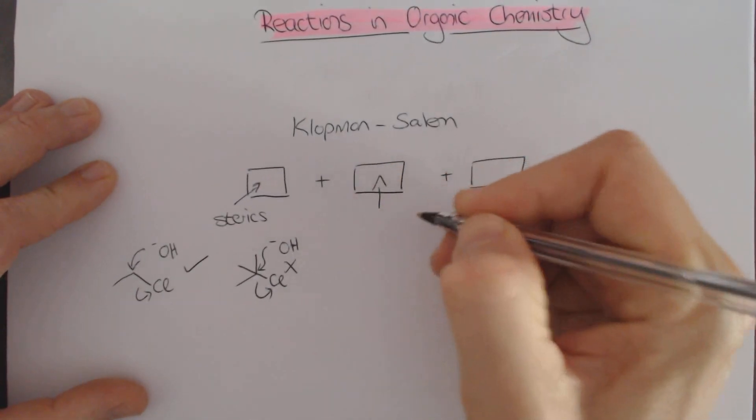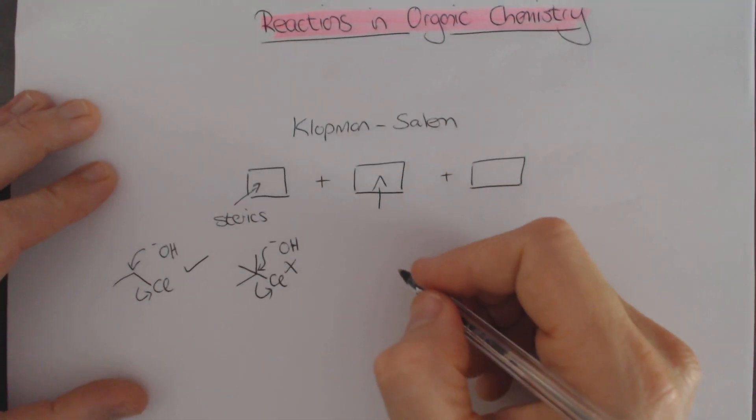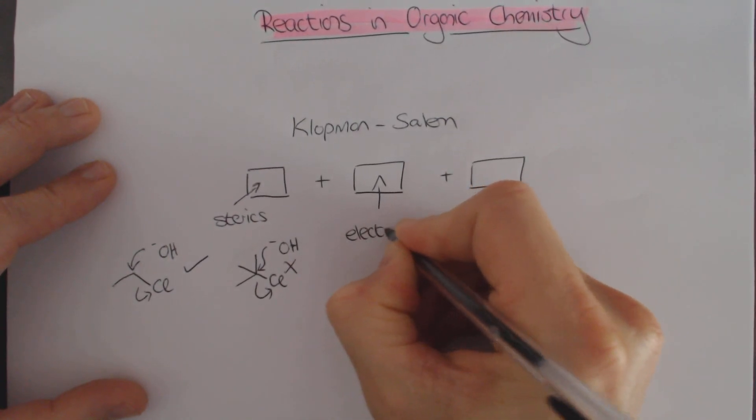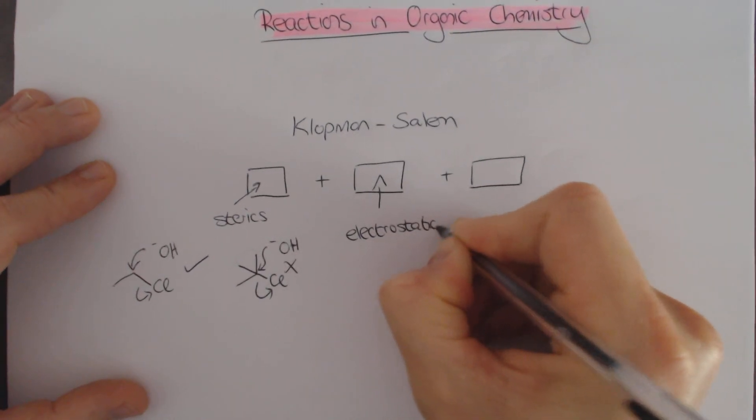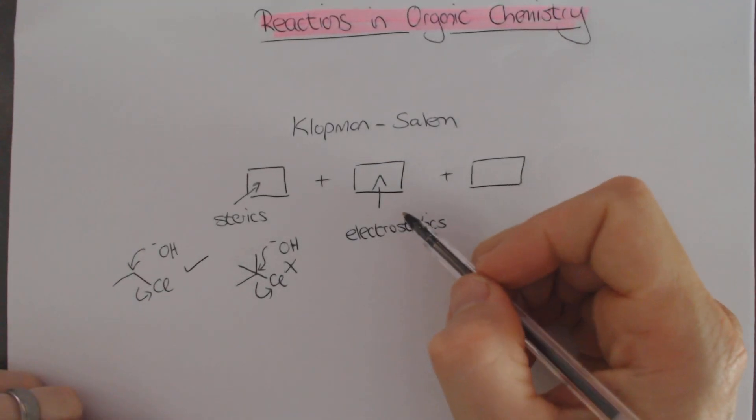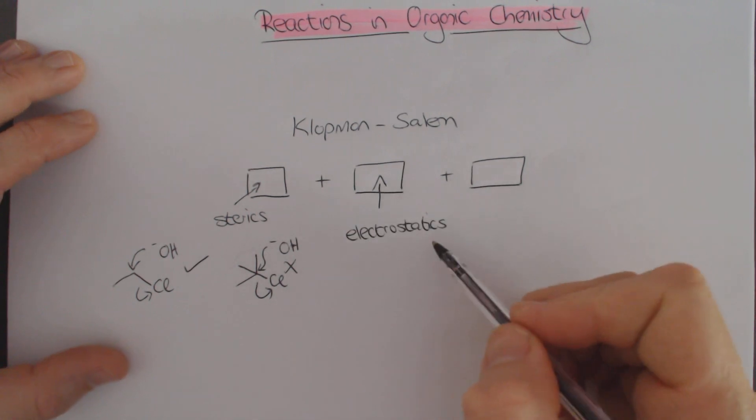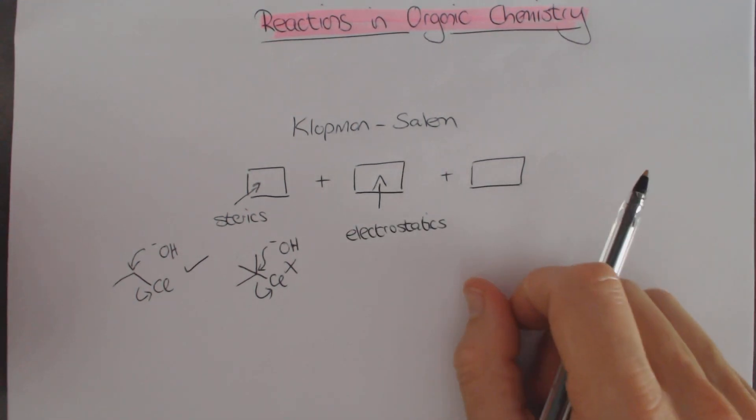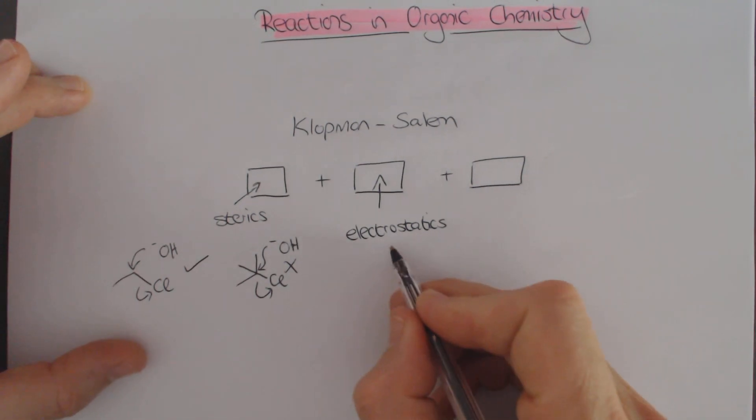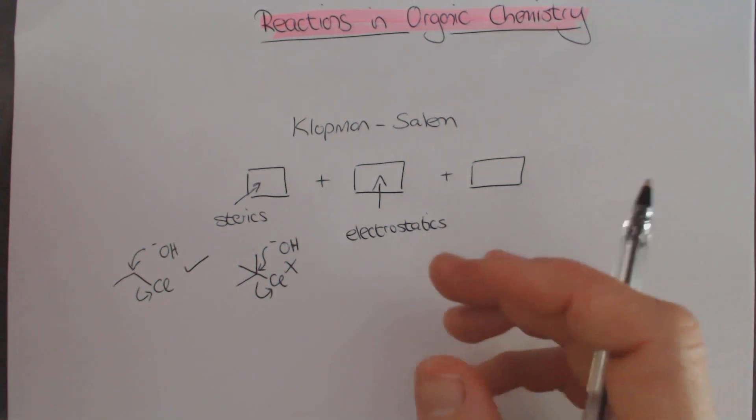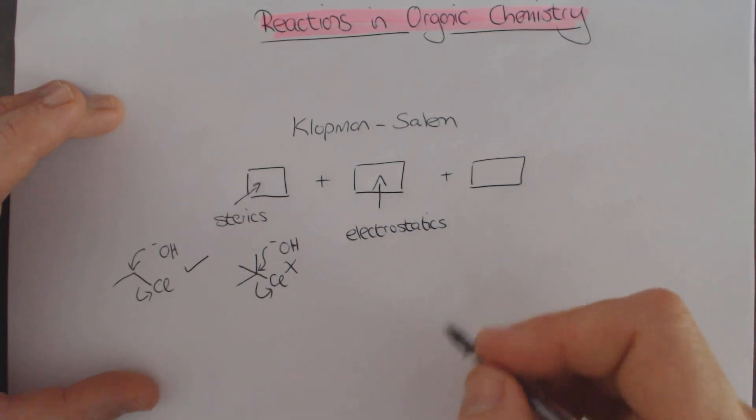The next section over here is a part of the equation that has to do with electrostatics of the reaction. This one is electrostatics. This is a little bit more complicated in that what it's talking about is Coulombic forces, pluses and minuses. Pretty much all reactions have some component of this. Electrostatics play quite a pivotal role in terms of bringing reagents together.